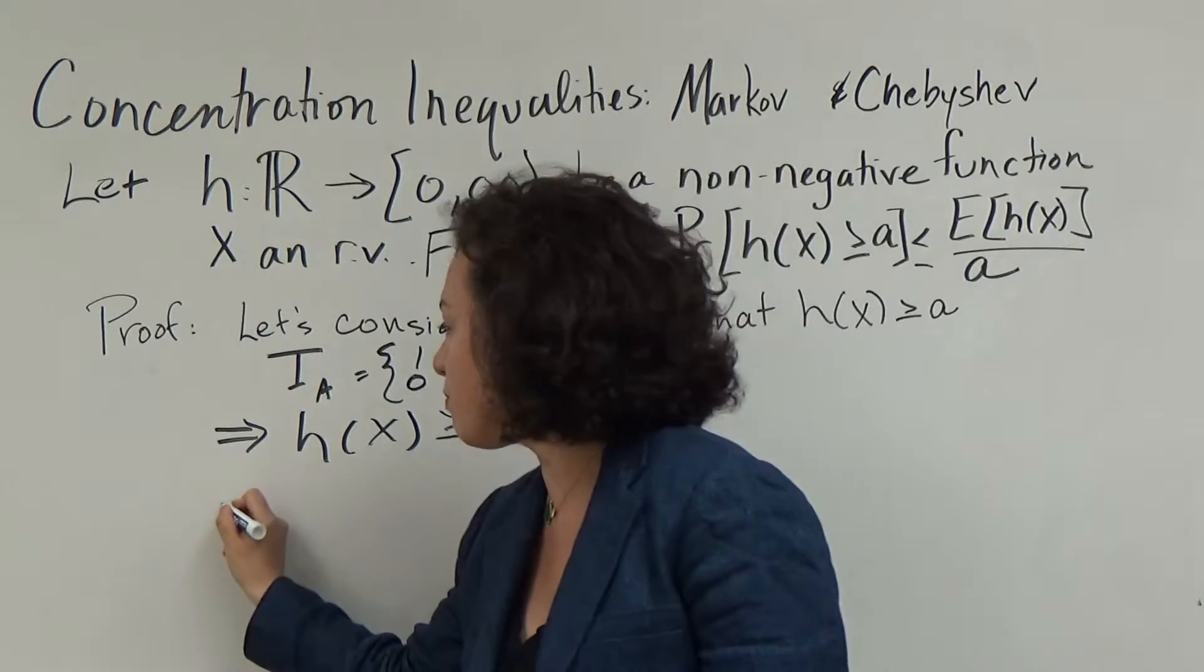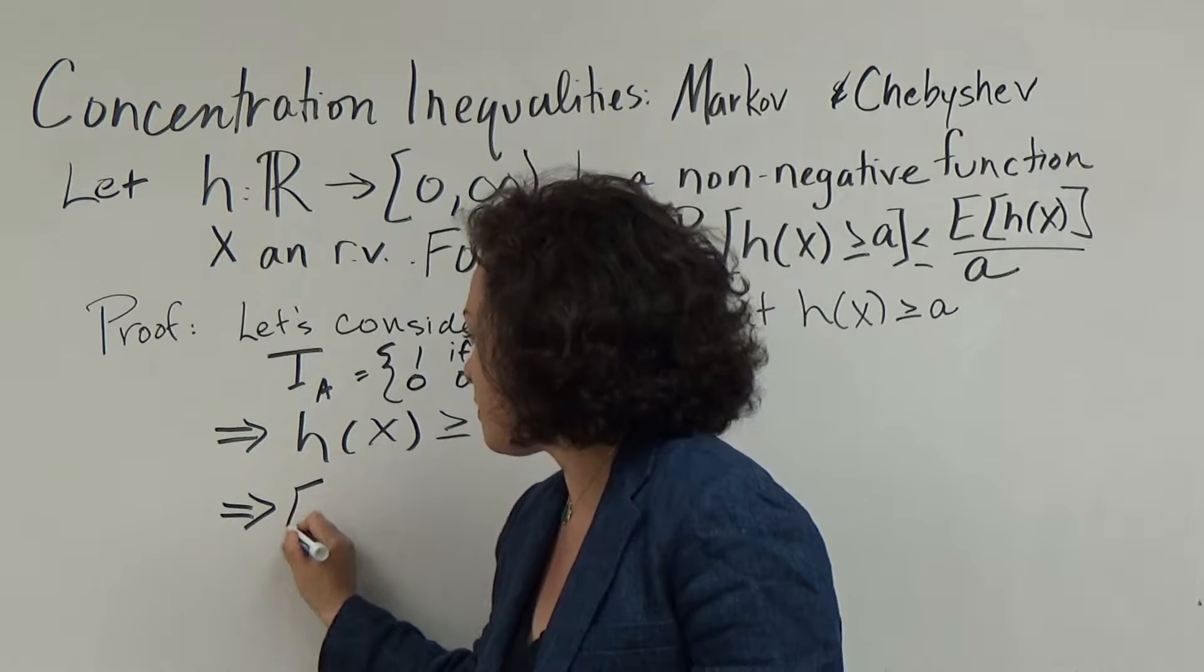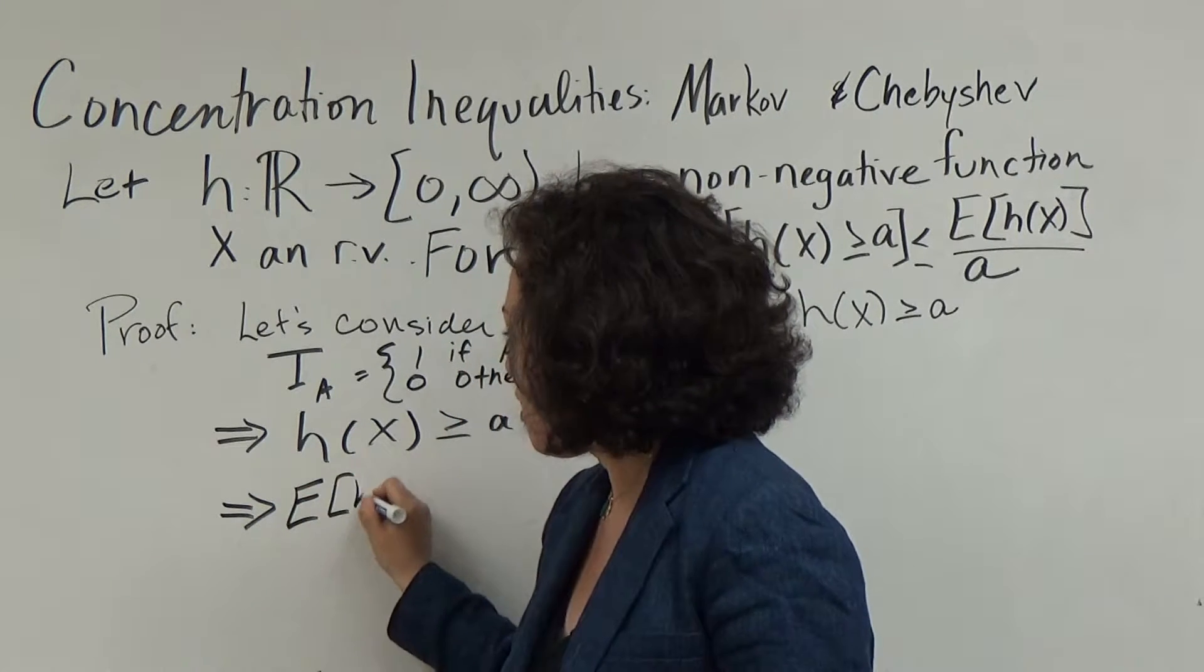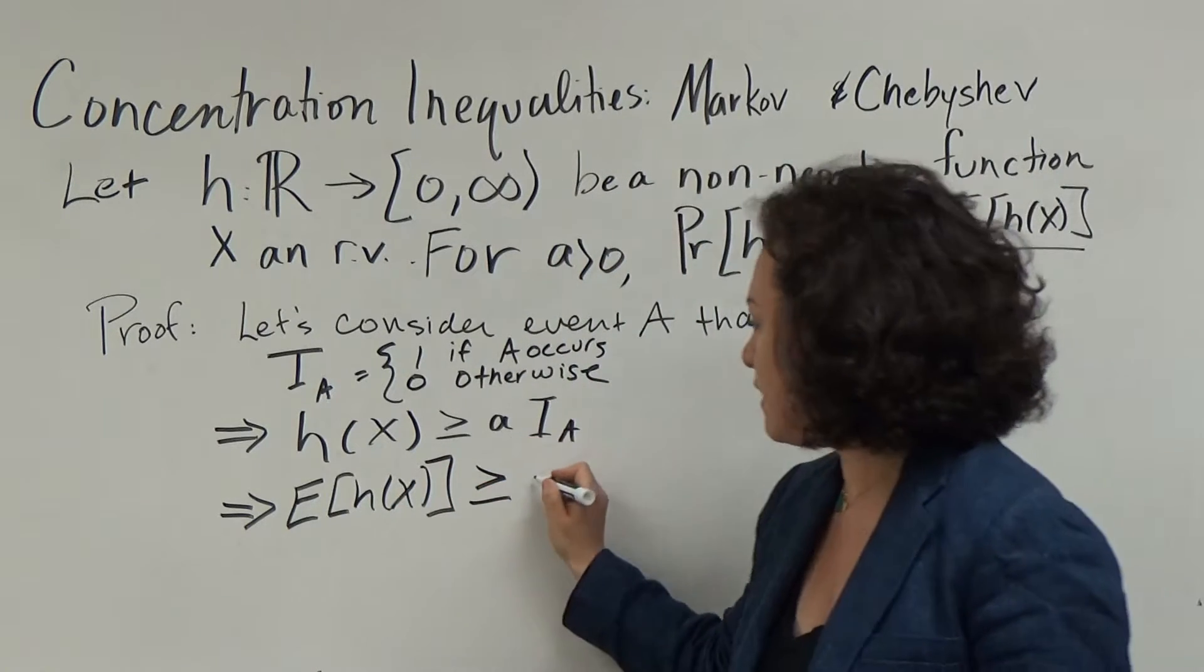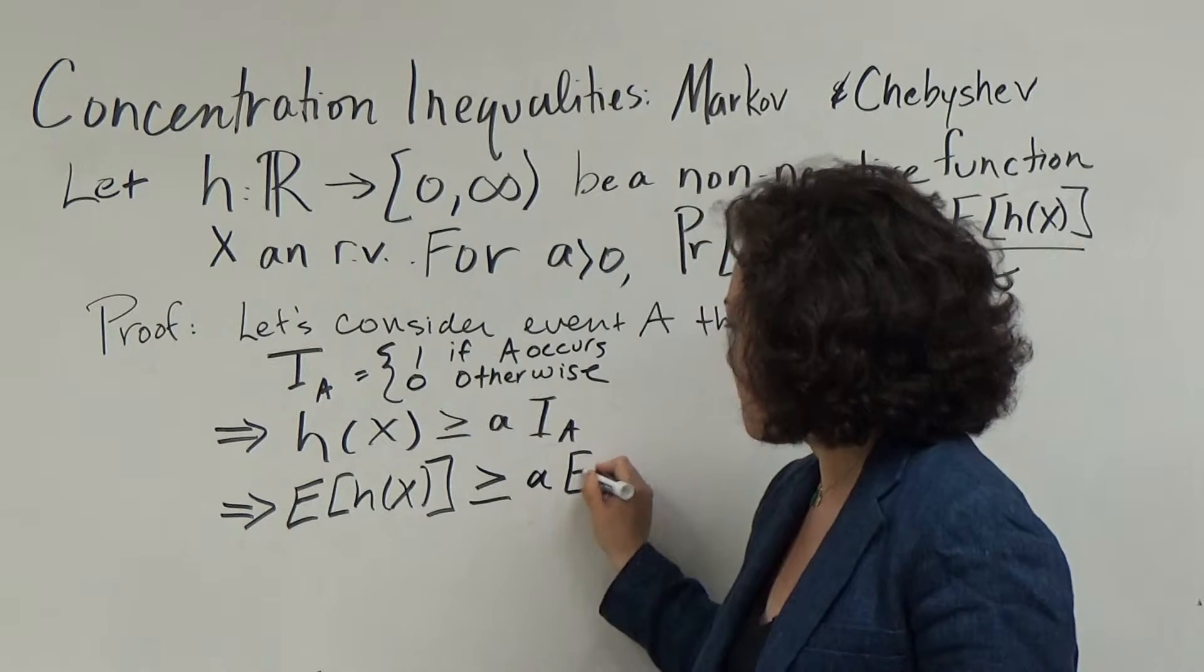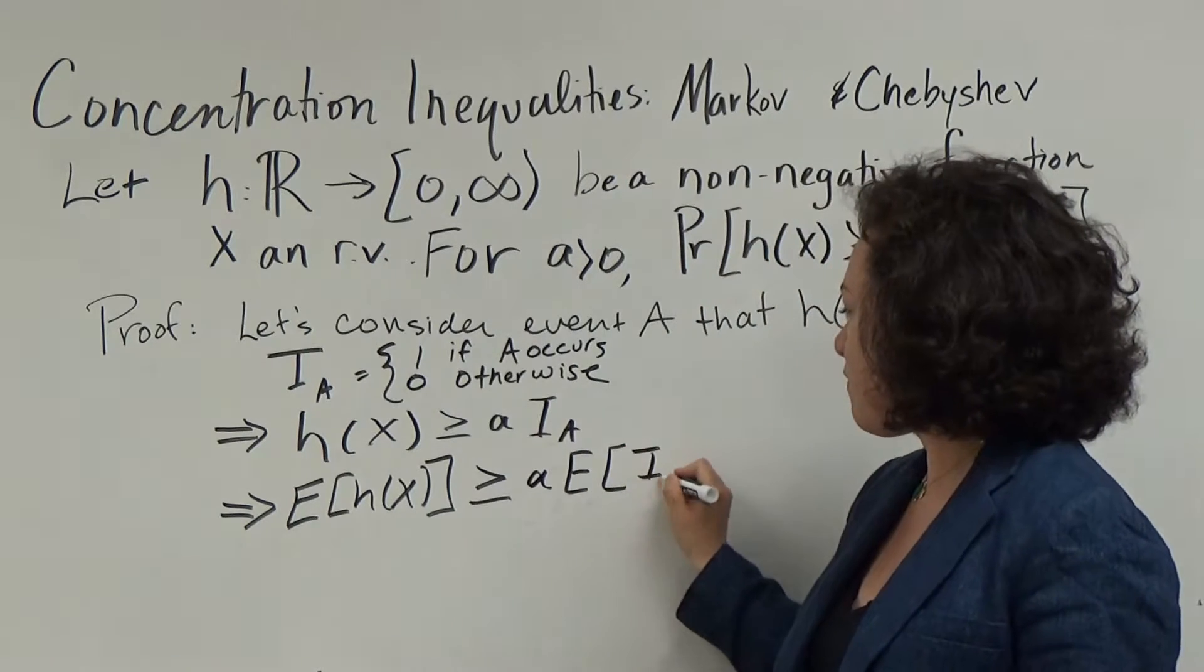Now, to make more progress, let's take the expectation of both sides. So the expectation of h(x) is greater than or equal to—I'm going to pull out the a—and it's going to be the expectation of the indicator of the event A.